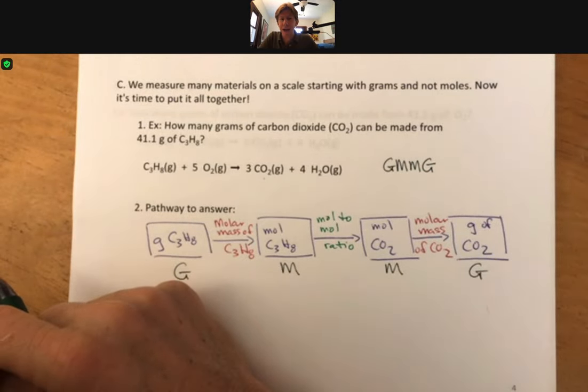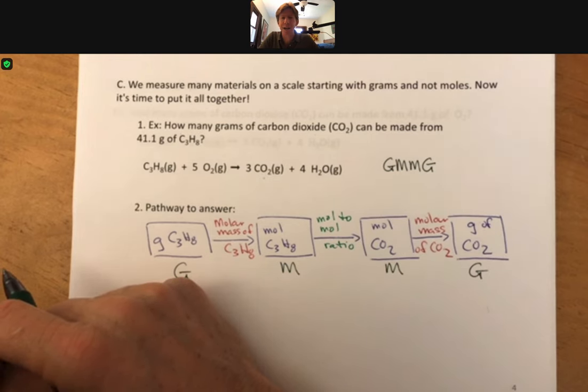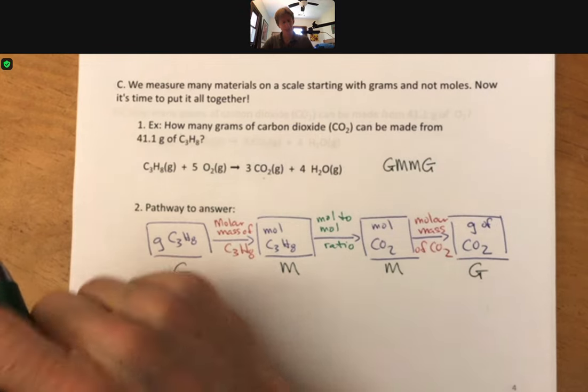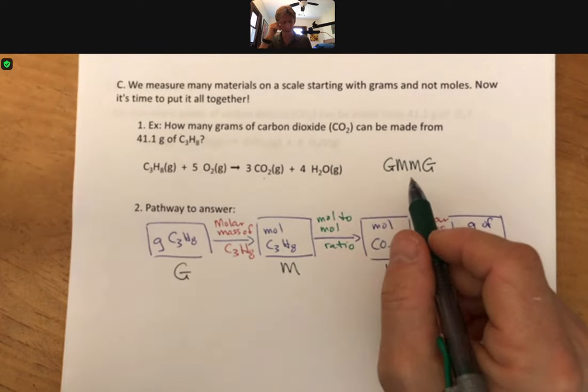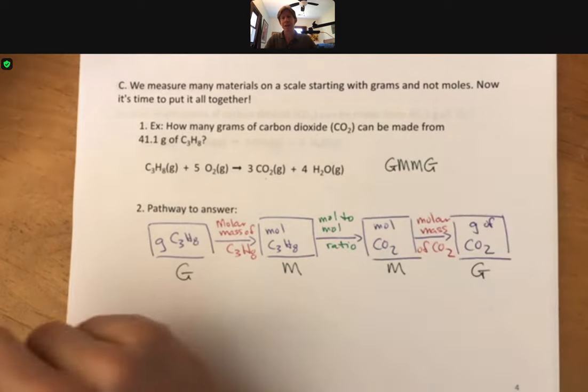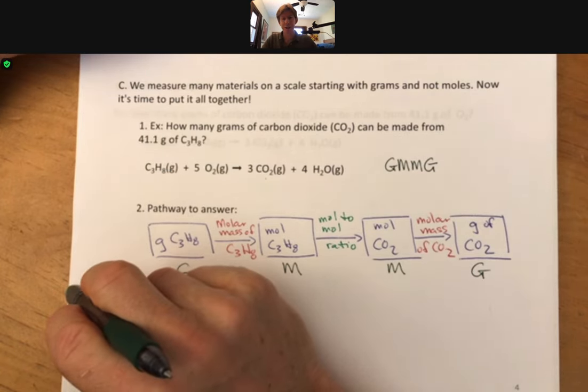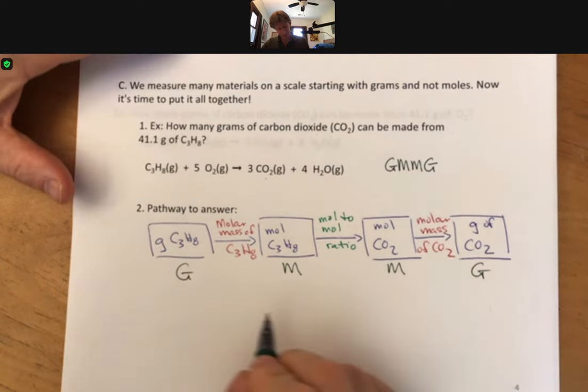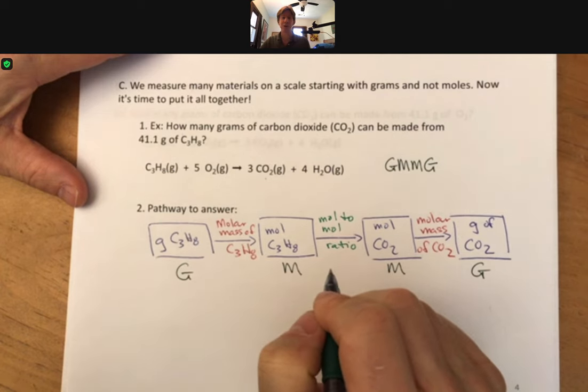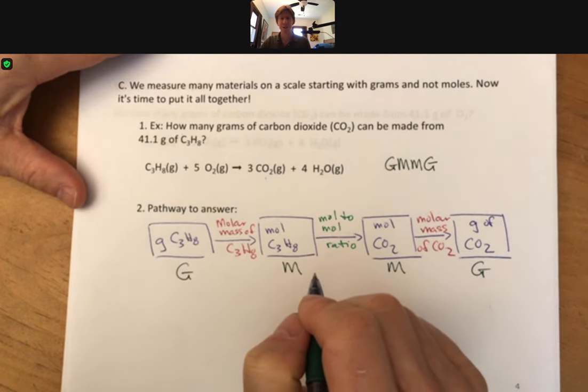I've never heard of an acronym or a mnemonic device associated with this one and so what I've done is I've created a discussion board for you to post your favorite way of remembering this. If you think about what we did for LEO GER, lose electrons oxidation, gain electrons reduction, we're going to do a similar thing here. You'll see it on the homework, it'll specifically say GMMG, and what I like to think of is that grandma makes magnificent gravy. That's my mnemonic for this. The discussion asks you to come up with your own acronym.